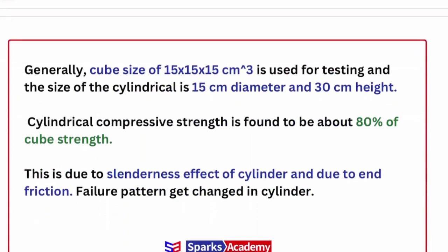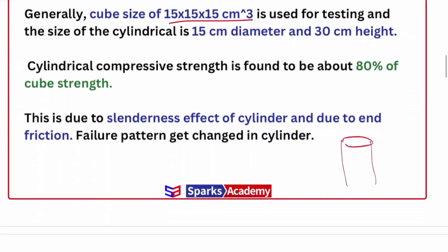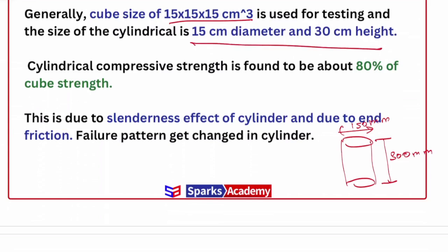Now for size variations — cylinder specimen we can load, or cube specimen we can load. The cube is 15 × 15 × 15 cm. This cylinder is very commonly used; the cylinder ratio is 2:1 — height 300 mm and diameter 150 mm. So the size of the cylinder is 15 cm diameter and 30 cm height.